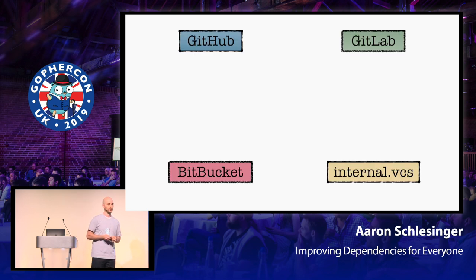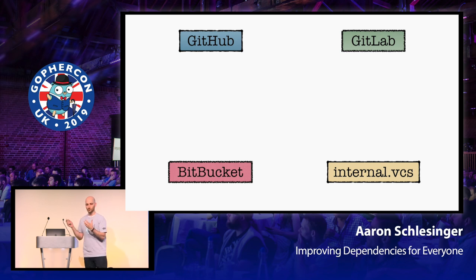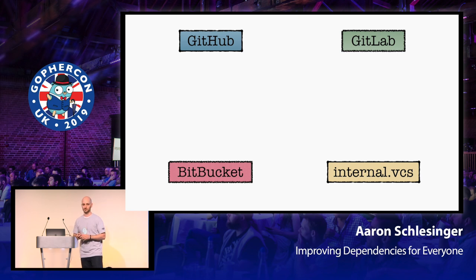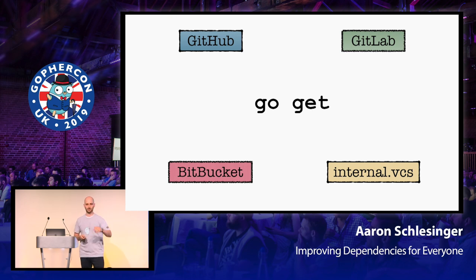Let's go back to the beginning of dependencies in Go. Go was launched without support for dependencies on purpose, because we had to wait to get some use cases to figure out how people were really doing dependencies. Once we got that, we got Go Get. Go Get would talk to all the different version control systems — GitHub, GitLab, Bitbucket, Mercurial, others — including the internal version control system at your organization.